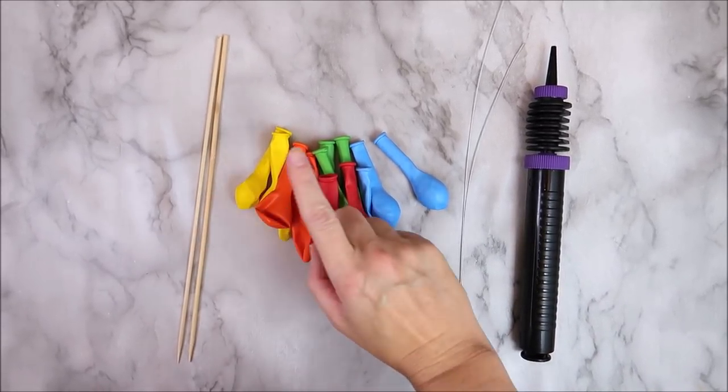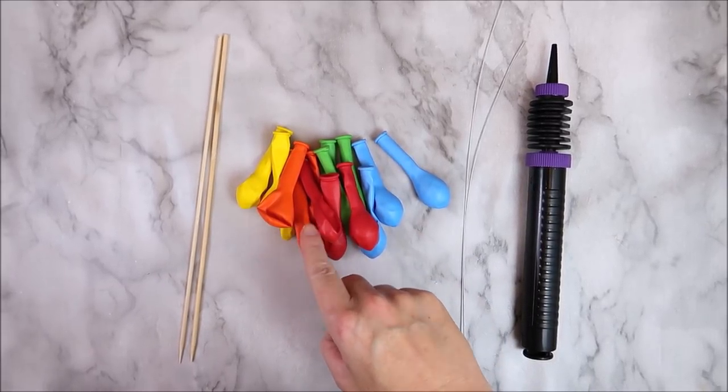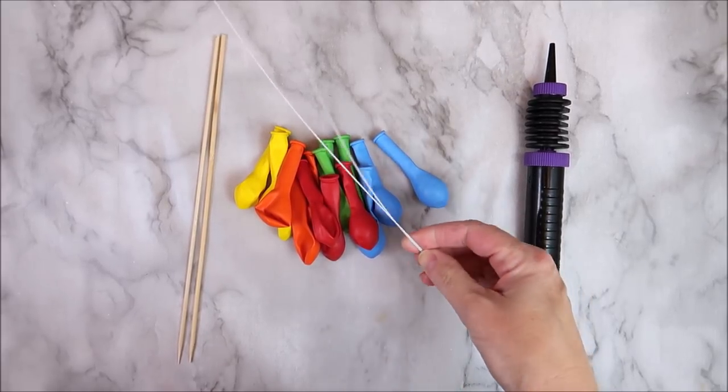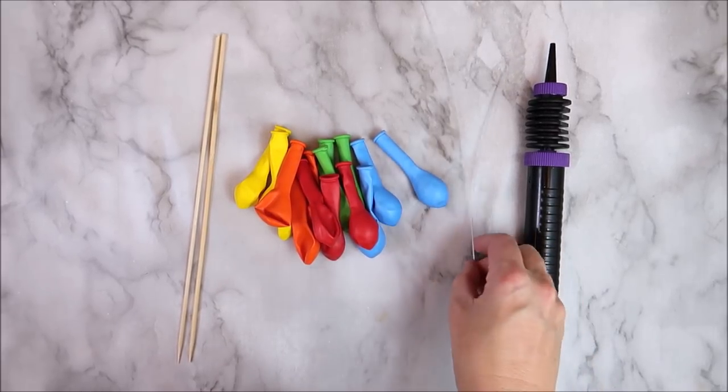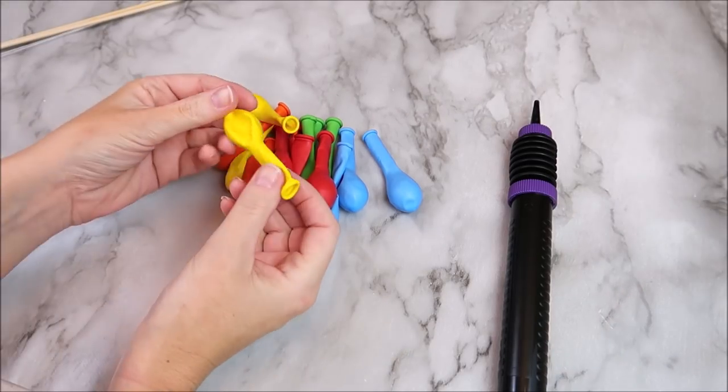So let's get started. All you're going to need to make this cake topper are some miniature balloons, and you can order these in any color. You're going to need two large barbecue skewers, some wire, and it helps to have a miniature balloon pump as well.